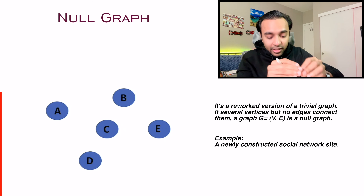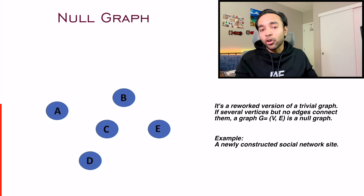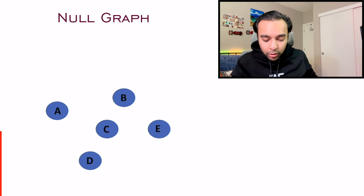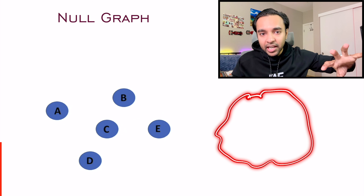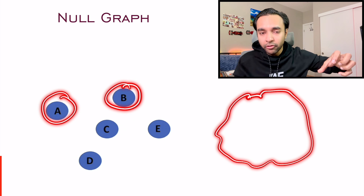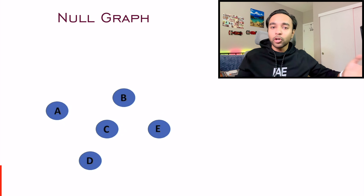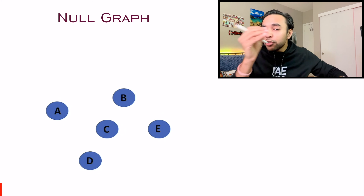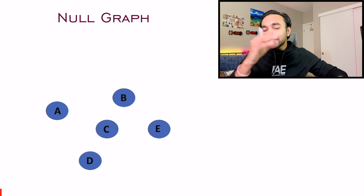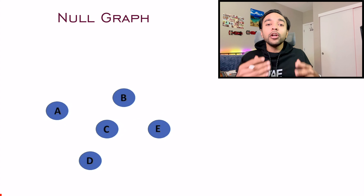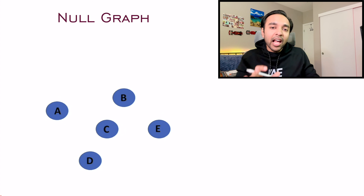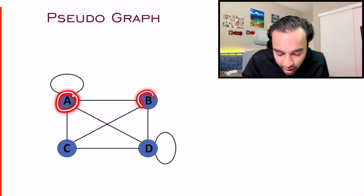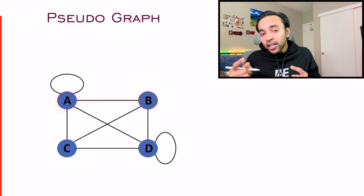A good example of a null graph is a newly constructed social network site — all nodes are individual profiles but none of them have any friends, so they are not connected at all. You can also think about null graphs as suspicious spam profiles: you have a large network where everyone is connected, but then you have newly created profiles with no connections. This is how you can start identifying whether those profiles are fake.